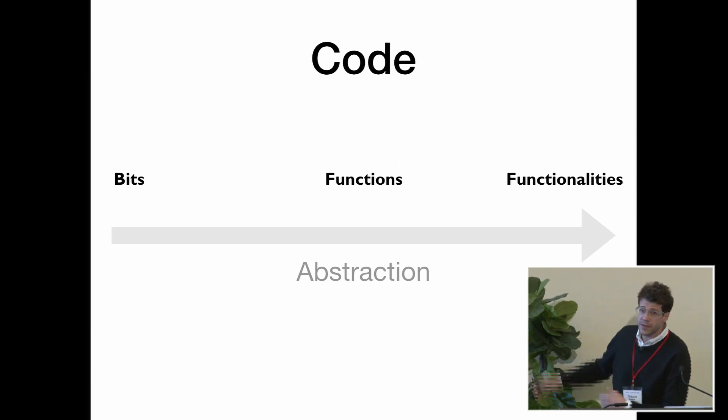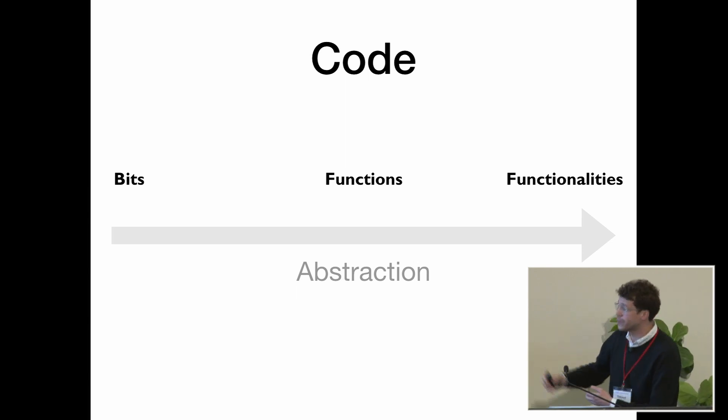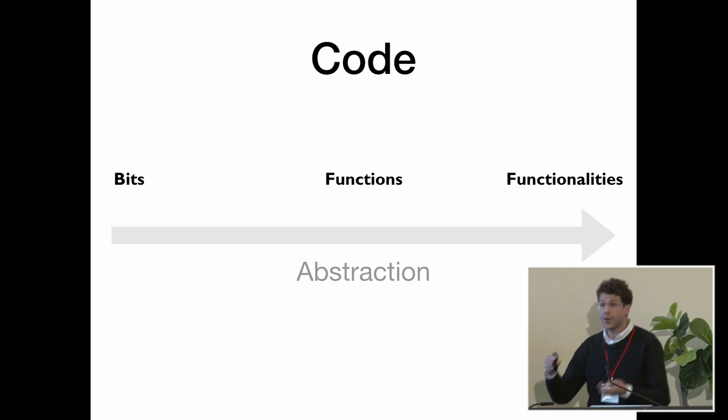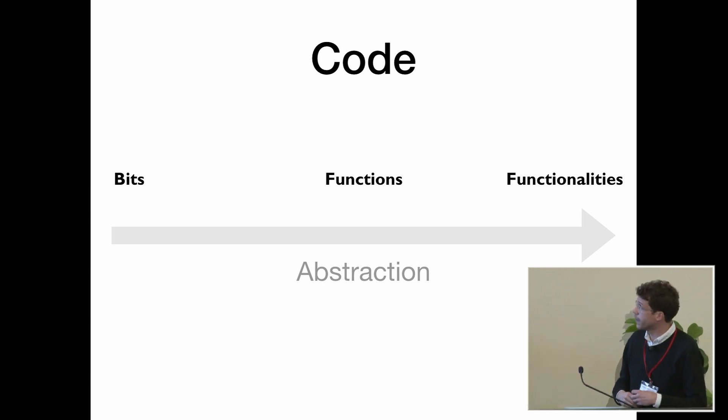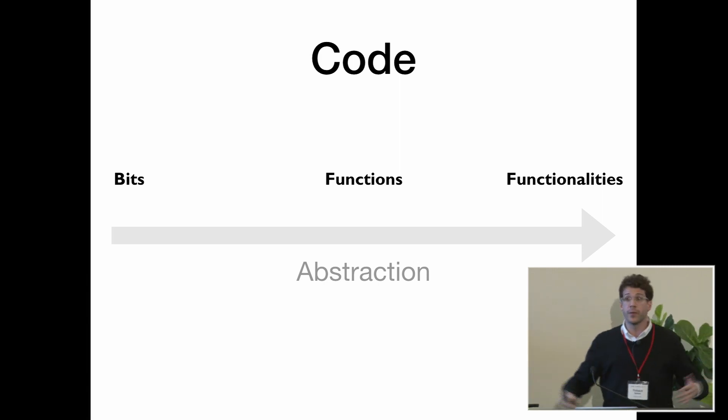And for every single one of those layers, there's a whole ecosystem of tools that we can use to understand code and to make sure that it works. For bits, we can use performance counters. For functions, we can place some assertions, do unit tests. For functionalities, we can do more end-to-end testing, even user studies.